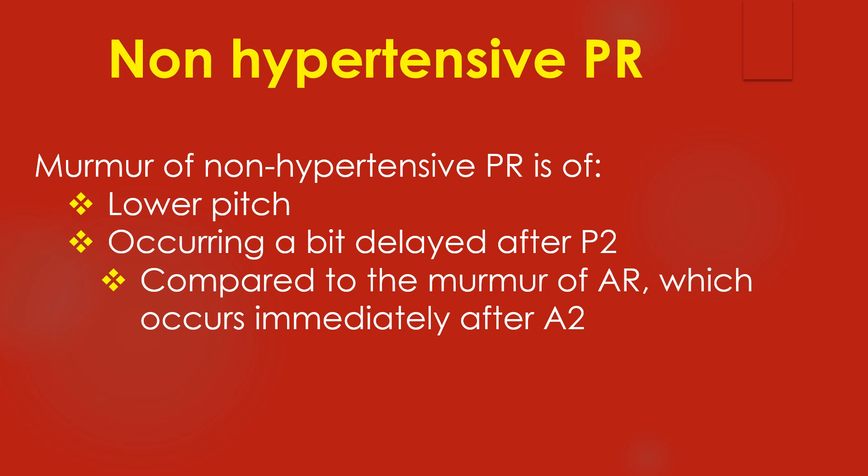The murmur of non-hypertensive PR is of lower pitch and delayed diastolic, occurring a bit delayed after P2, compared to the murmur of aortic regurgitation which occurs immediately after A2.